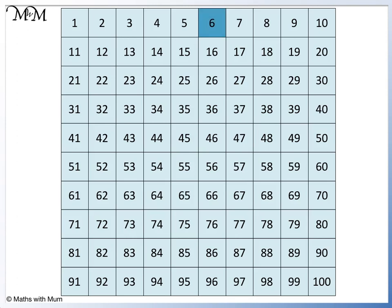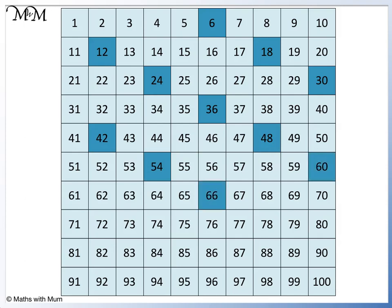1 six is 6, 2 sixes are 12, 3 sixes are 18, 4 sixes are 24, 5 sixes are 30, 6 sixes are 36, 7 sixes are 42, 8 sixes are 48, 9 sixes are 54, 10 sixes are 60, 11 sixes are 66, 12 sixes are 72.